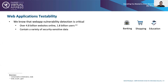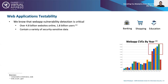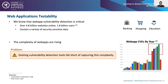Finding vulnerabilities in web applications is important. There are over 4.8 billion websites online — for banking, shopping, education, and so on — with around 1.8 billion users online. These applications contain a variety of security-sensitive data. The number of vulnerabilities in web applications has been increasing in recent years. However, what has been somewhat ignored is that the complexity of web applications is also rising — they are far more complex today than they used to be.